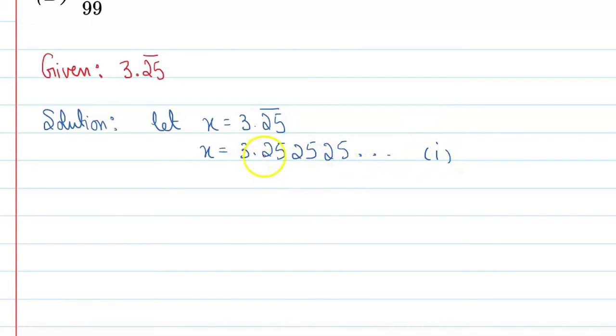You can see here two digits are repeating. If one digit was repeating, we multiply by 10. Here two digits are repeating, so we will multiply by 100. Let's write it: multiply equation 1 by 100.